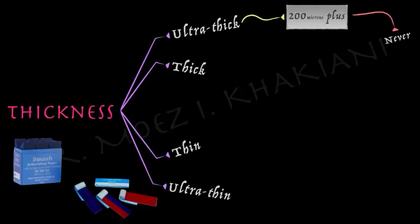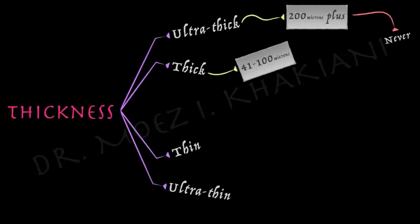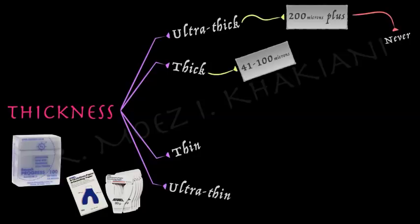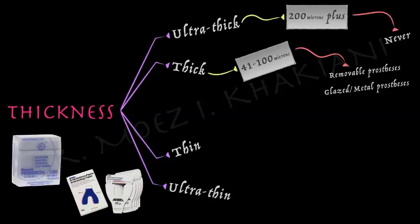The next cluster is thick articulating papers — generally 41 to 100 microns in thickness. Here are a couple of examples: Progress 100 from Bausch at 100 microns, and an 80 micron paper from Hanel in horseshoe form. In my practice, I prefer to use thick articulating papers for all forms of removable prosthodontics — complete dentures, cast partial dentures, and regular acrylic flipper dentures. These require thicker papers, so 100 micron or 80 micron is generally what I prefer here.